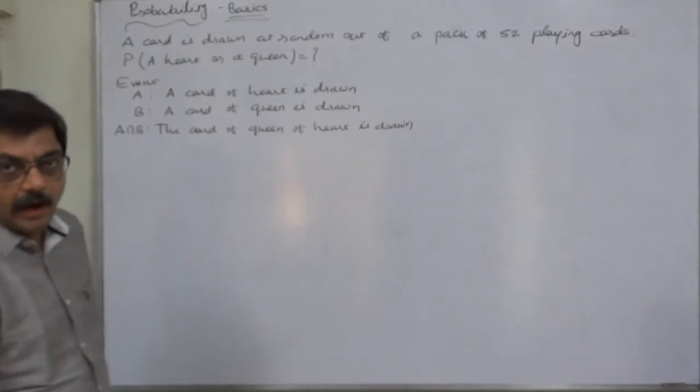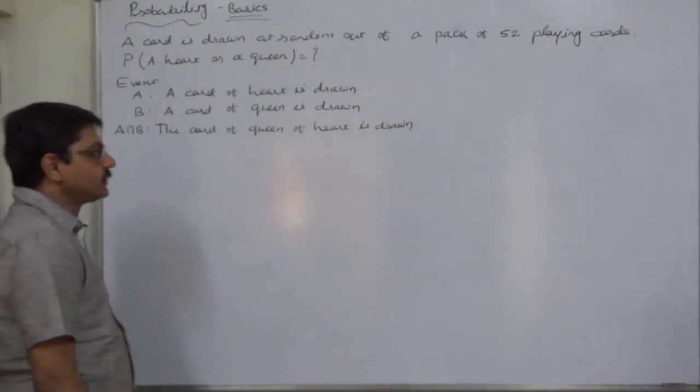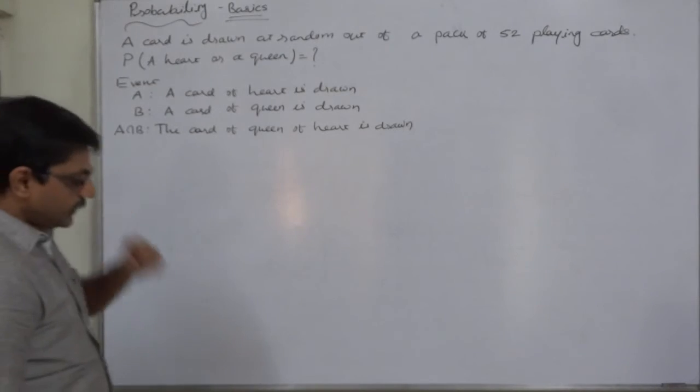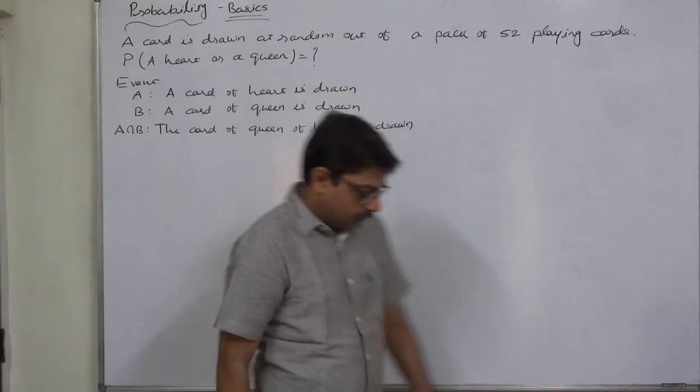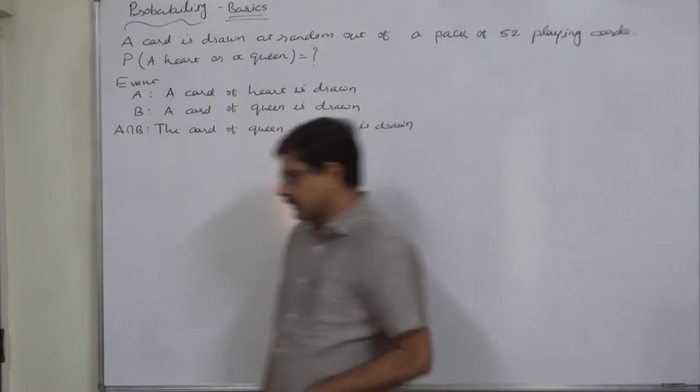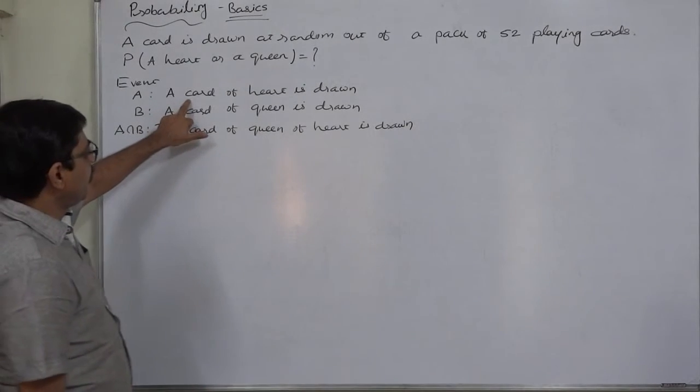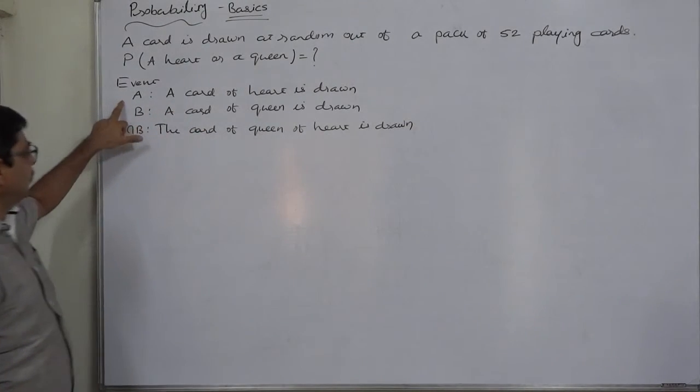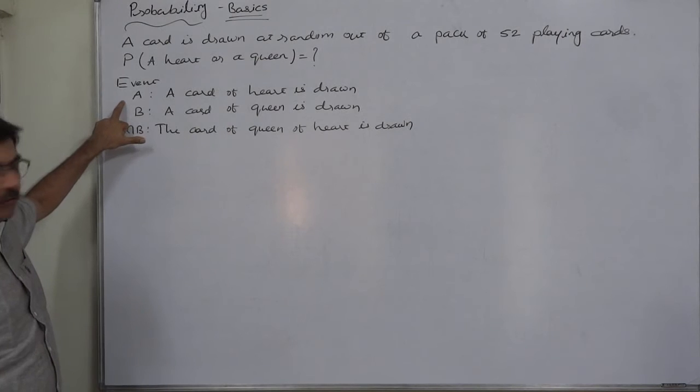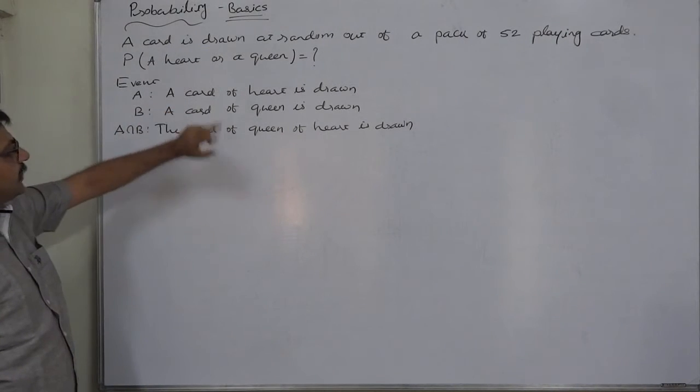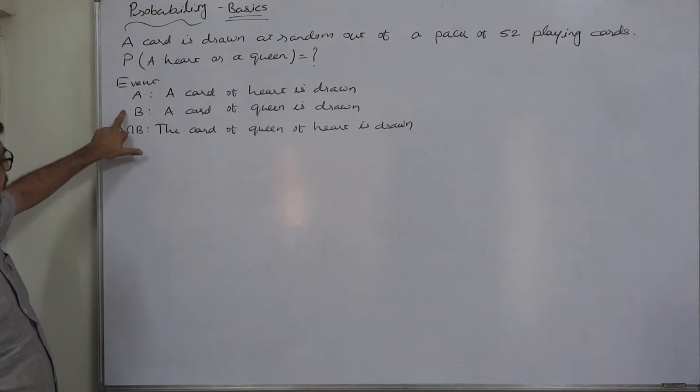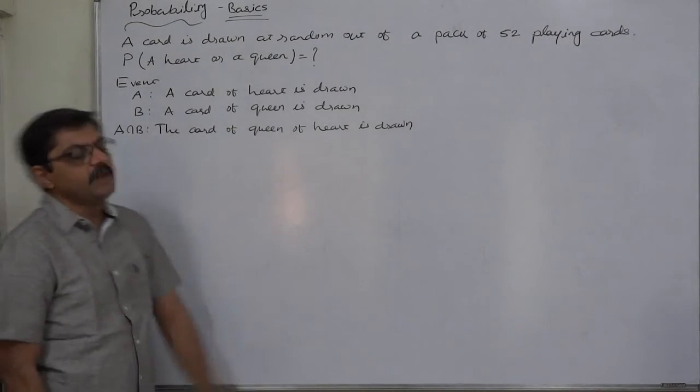The card of heart or a queen is drawn. So there are a few possibilities. First, a card of heart is drawn. Let us use sign A for this event. A means a card of heart is drawn. Similarly, B means a card of queen is drawn.